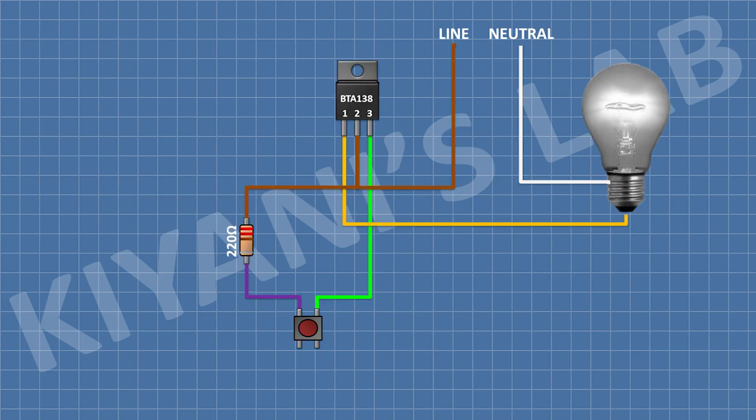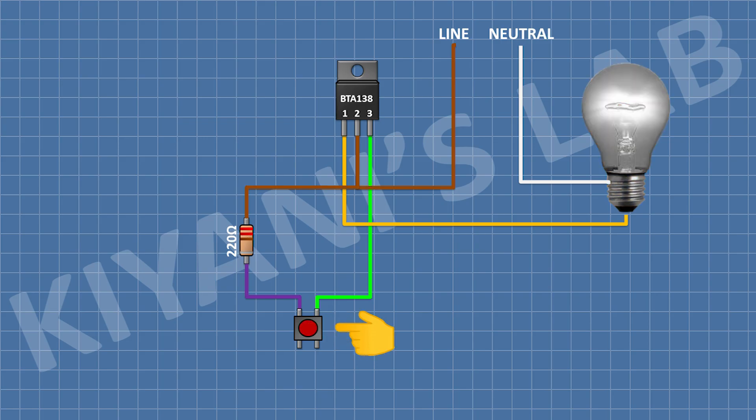This is a basic switching circuit of triac. We have used a push button to turn on and off the triac and we have connected a lamp as the load. When we press the push button, the triac turns on so that the lamp turns on. And when we release the button, the lamp goes off.